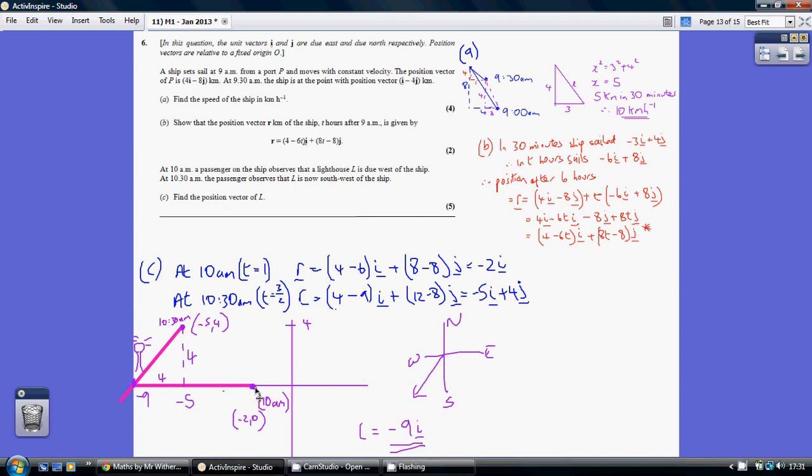So I've plotted these. Minus 2 here, so here he is at 10, here he is at 10:30am. So a minus 2, 0 and a minus 5, 4.